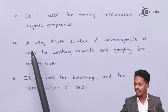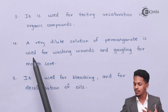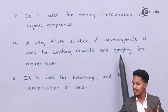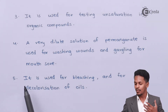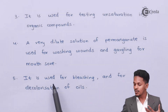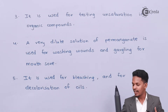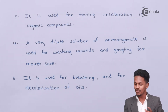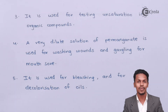A very dilute solution of permanganate is used for washing wounds as well as gargling for mouth sores. Additionally, KMnO₄ is used for bleaching of clothes like cotton and wool, and also for the decolorization of oils. These are the main uses of KMnO₄ discussed in this topic.